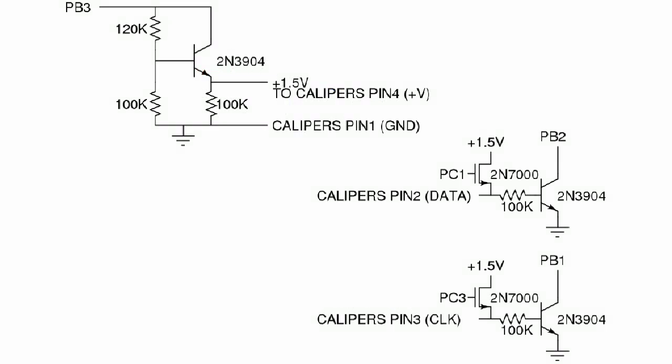The next modification we made was to add two 2N7000 MOSFETs to let us put the calipers into a special high-speed mode. This lets us get a new reading from the calipers about 40 times per second, instead of about 3 times per second.